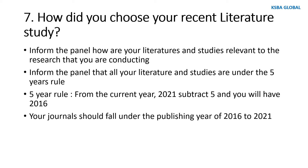Question 7: How did you choose your recent literature study? Inform the panel how your literature and studies are relevant to the research you are conducting. Inform the panel that all your literature and studies follow the 5-year rule — from the current year 2021, subtract 5 to get 2016. Your journals should fall within the publishing years of 2016 to 2021.